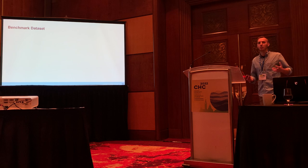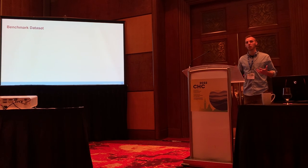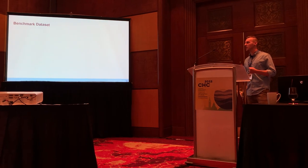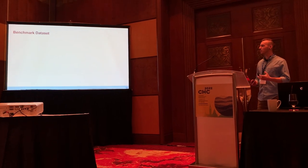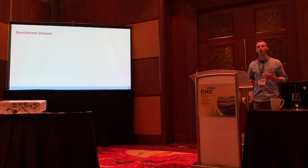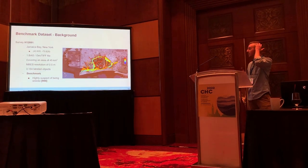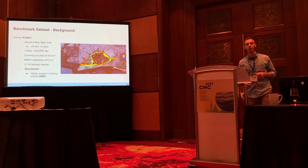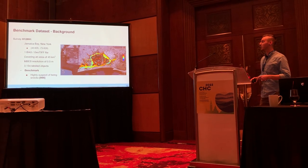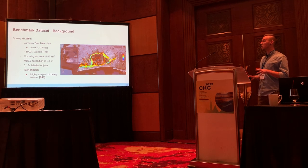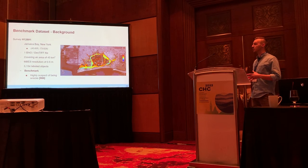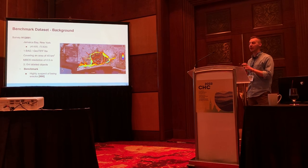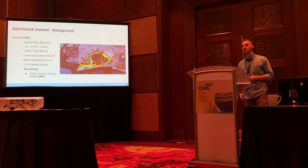There's not a lot of data available for the purpose of ATR made available to the public. Unfortunately we can't release all of our data at this time, but we are releasing a very small subset that serves as a benchmark for those who are interested. The data comes from Survey H12891, which is near Jamaica Bay, New York. It covers an area of about 45 kilometers squared, and in total we have about 3,000 labeled objects. For our experiment, we're focusing on about 1,000 of those, which are highly suspect of being wrecks.